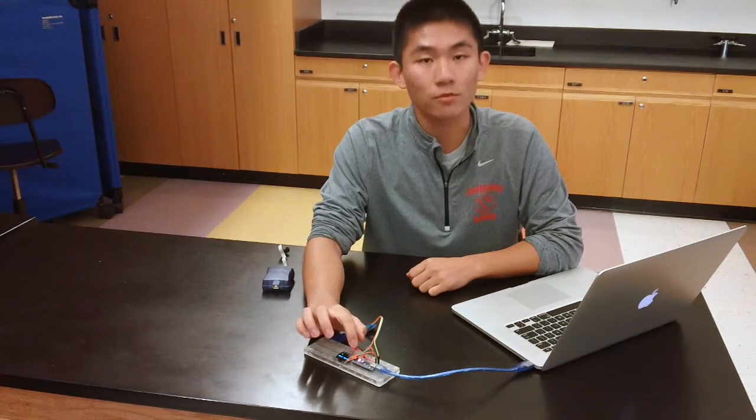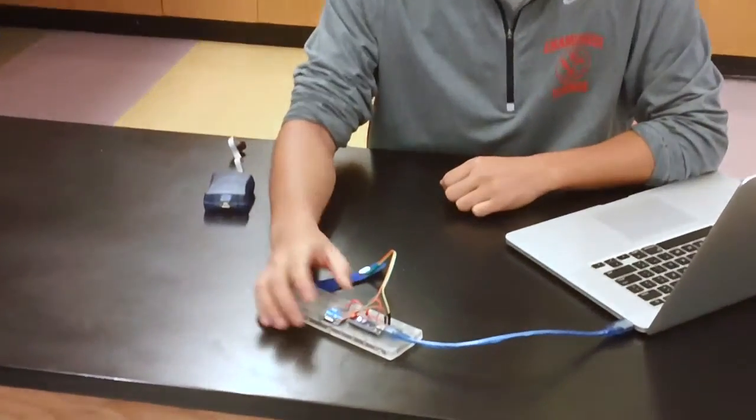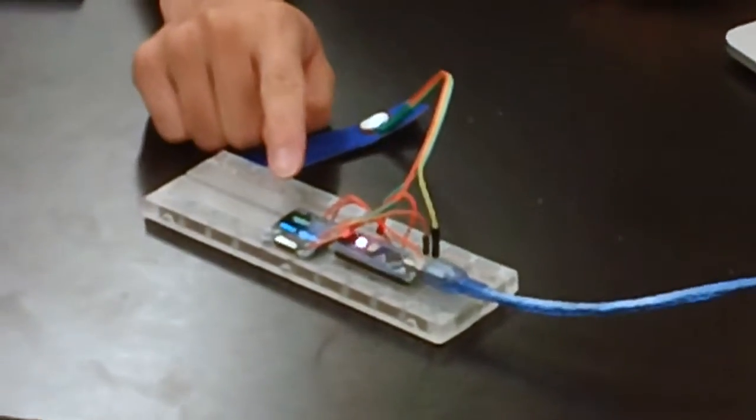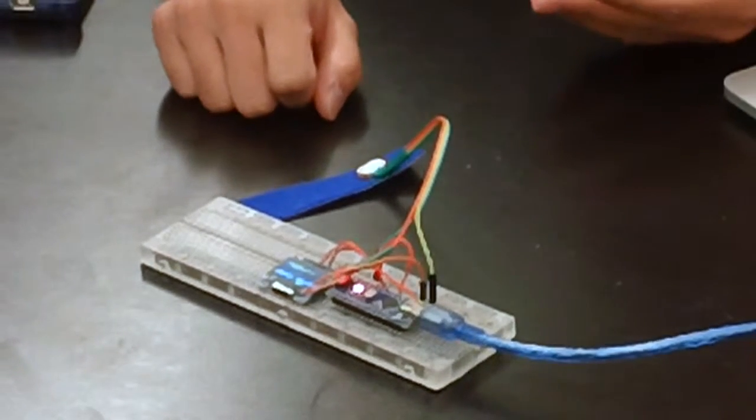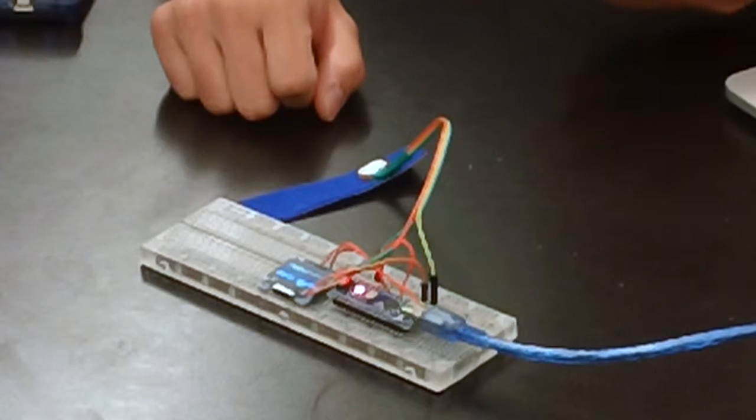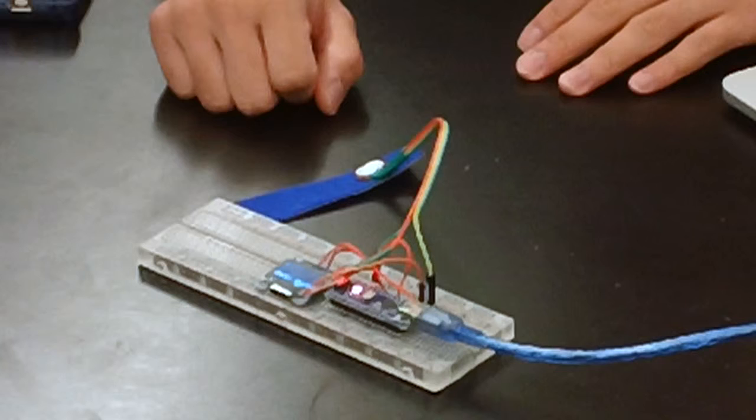So finally, the Arduino reads the data coming from pin A0, and does the calculations, and finally commands the OLED screen to display the data. A lot of coding was involved to do this. I was able to find source codes from two different websites, and added a lot of my own modifications to make this work.